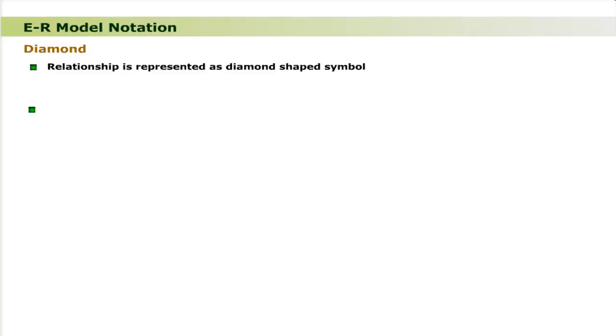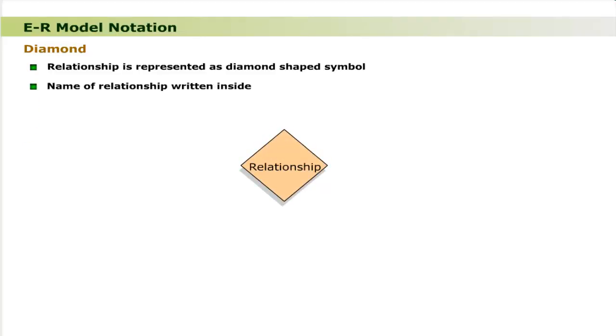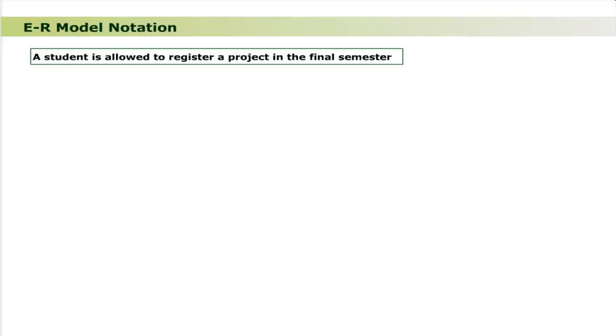Entity classes are logically connected or related with one another. This relationship is very important in database design and implementation — it is the glue that holds together various entity classes of an ER model. The relationship in an ER model is represented as a diamond-shaped symbol, with the name of the relationship written inside. For example, the relationship named 'register' is represented as shown. Consider the statement: a student is allowed to register a project in the final semester. The business rule is that only one student can register a given project.